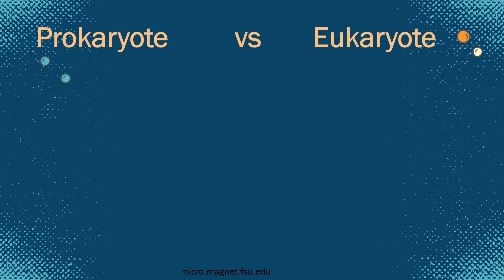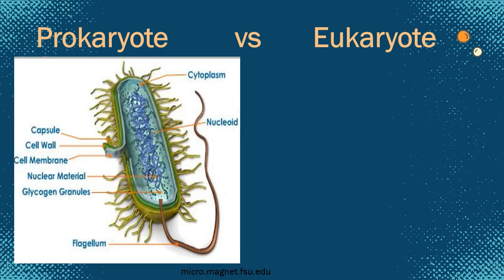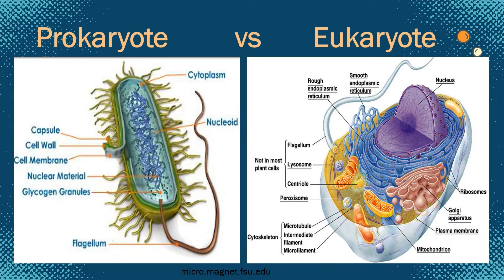Now let's have a closer look at the structure of these two cells — here is the prokaryote and here is the eukaryote. What are the distinguishing characteristics of each type of cell? Both of them have their own parts, which we call organelles — cell organelles that perform specific functions helping the cell maintain homeostasis, or a state of balance.